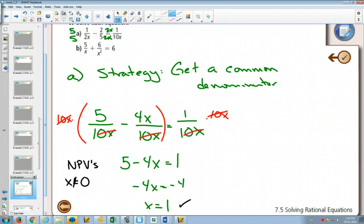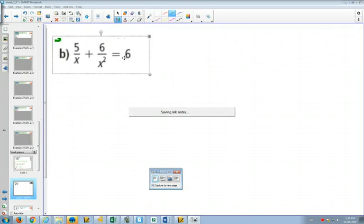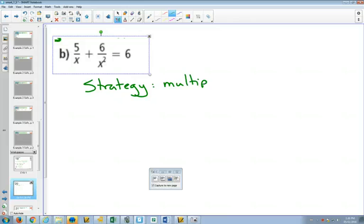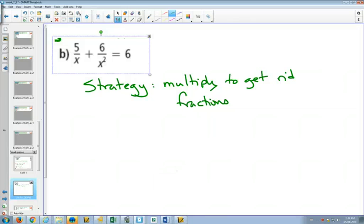For part b, the strategy that we're going to use is the one where we multiply to get rid of fractions. So instead of getting a common denominator first, we're going to multiply to get rid of fractions.